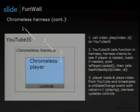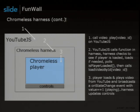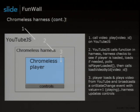Looking at the information flow from client-side JS to the Chromeless Player: client-side JS calls VideoPlay. The YouTube JS class calls a function in the harness. The harness checks to see if the player is loaded — loads if needed — then calls LoadVideoById, passing in a video ID describing which video to play. The Chromeless Player loads and plays the video from YouTube, broadcasts an onStateChange event with a value of one meaning 'playing,' and the harness updates the controls.